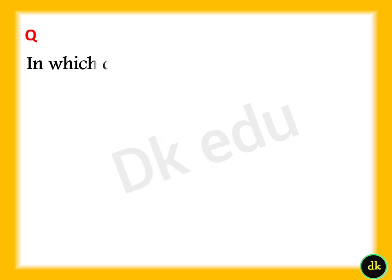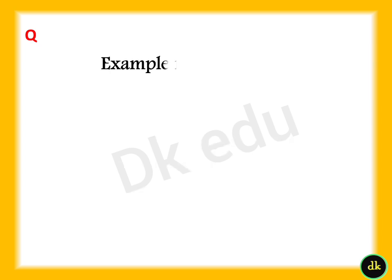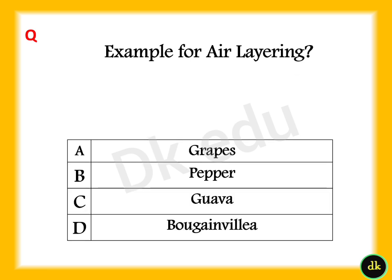In which district is KAU situated in Kerala? Answer: Option C, Thrissur. Example for air layering. Which acid is present in Kerala — Answer: Option C, Guava.